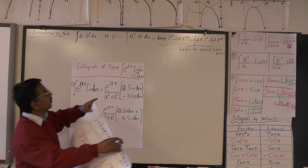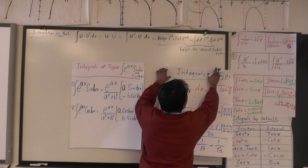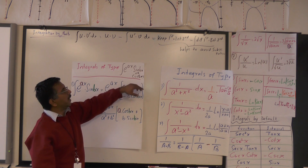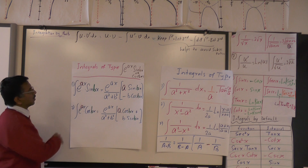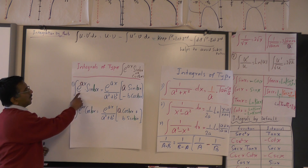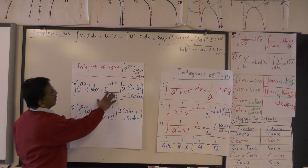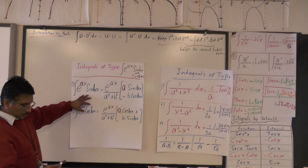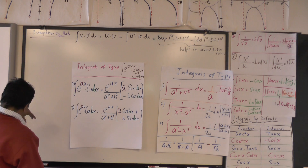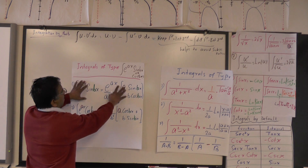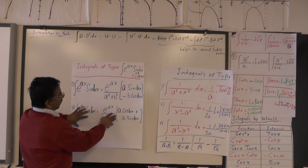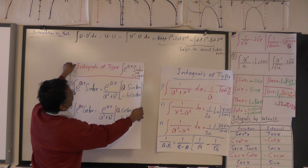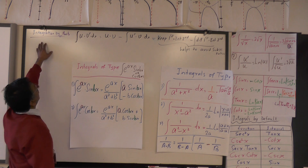Sometimes we have questions with an integral of exponential and trig, so e raised to ax times sine of bx. So here are the formulas. Let's check one — the formula for integral of e raised to ax times sine bx is this whole expression, and it helps us easily solve any given problem. Let me first prove one of these formulas; you can try the other yourself, and then we'll do one or two examples on how to apply it.